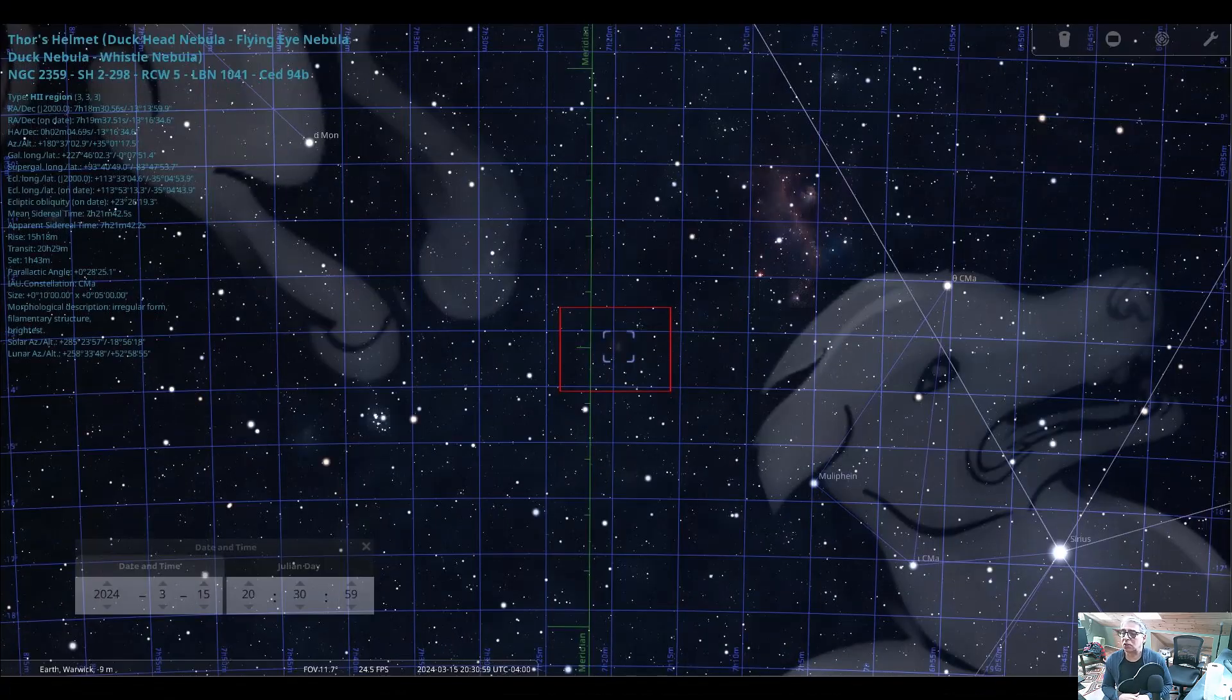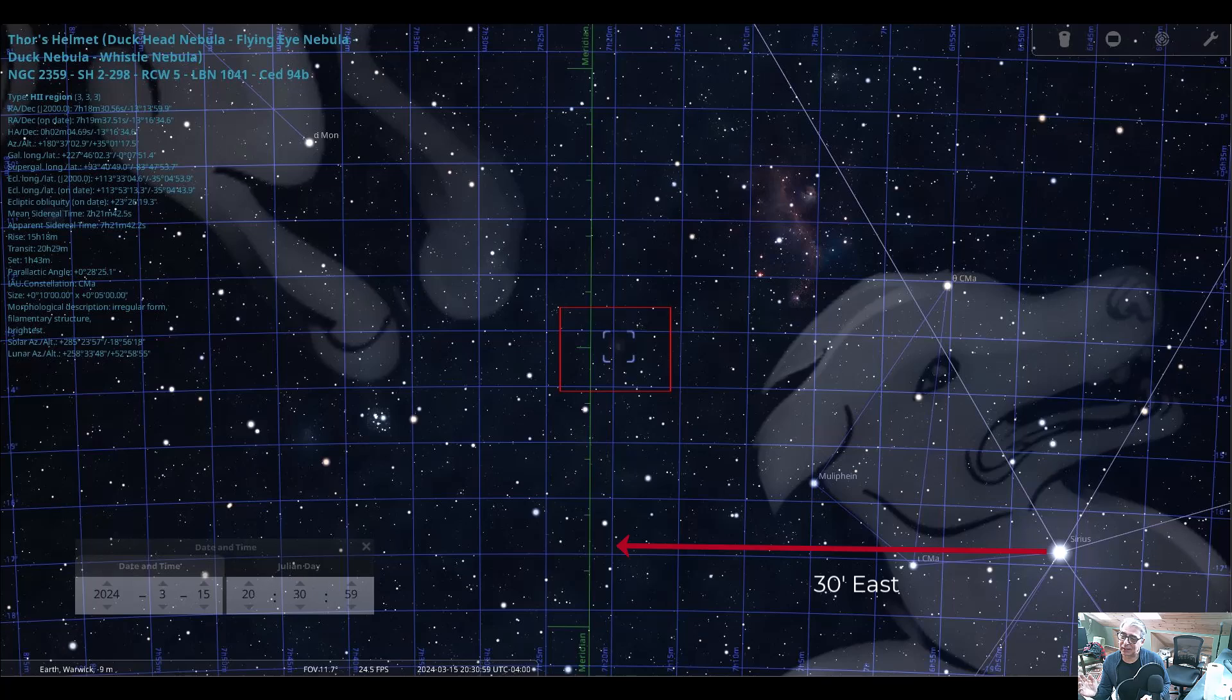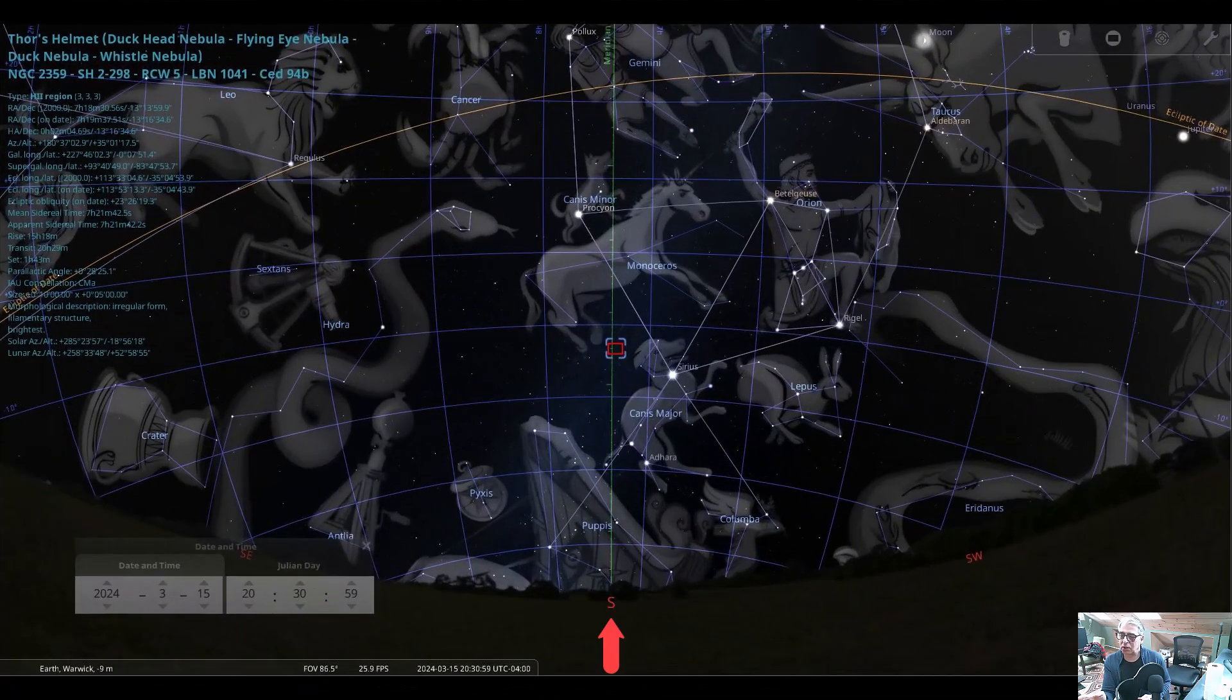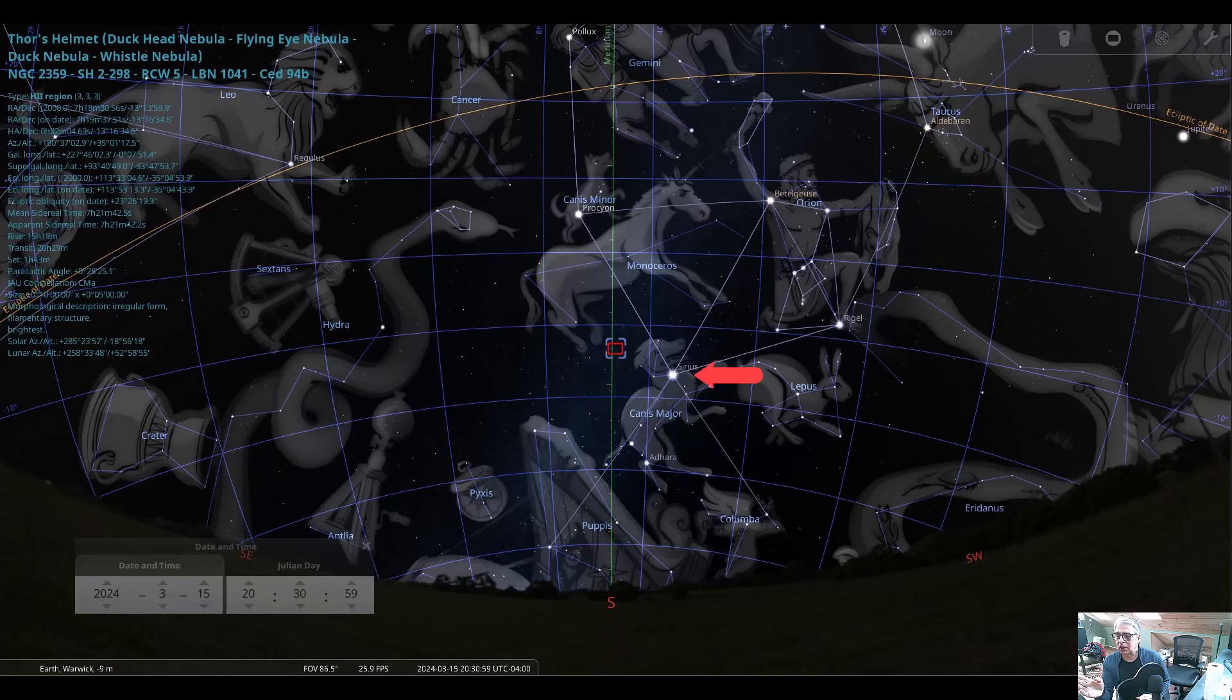NGC 2359 is about 30 minutes east in RA and about 4 degrees north in declination from Sirius. So if you can face south, spot Sirius, and then just look a bit up and to the left, that's the area in which you'll need to point your telescope in order to find NGC 2359.